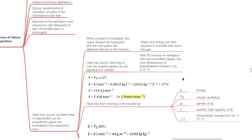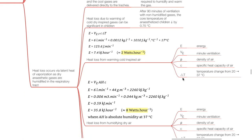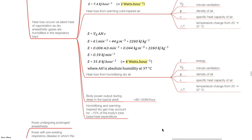Drying, keratinization and ulcerations of parts of the tracheobronchial tree may occur and may result in necrosis of epithelium and squamous cell metaplasia if the lack of humidification is prolonged. Heat loss occurs via latent heat of vaporization as dry anesthetic gases are humidified in the respiratory tract. When a patient is intubated, the upper airways are bypassed and cool gases are delivered directly to the trachea. Water and energy are then required to humidify and warm the gas. After 90 minutes of ventilation with non-humidified gases, the core temperature of anesthetized children reduces by 0.75°C. Heat loss from warming cold inspired air costs about 2 watts per hour and heat loss from humidifying dry air costs about 8 watts per hour. Humidifying and warming inspired dry gases may account for up to 15% of the body's total basal heat expenditure.